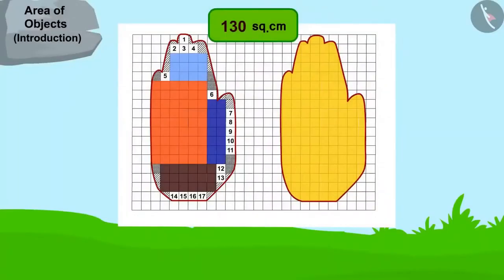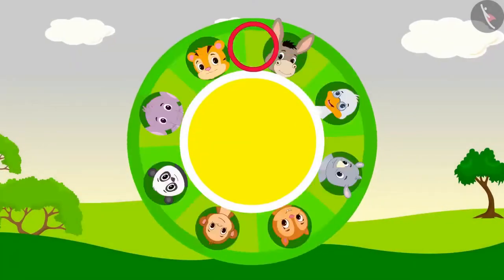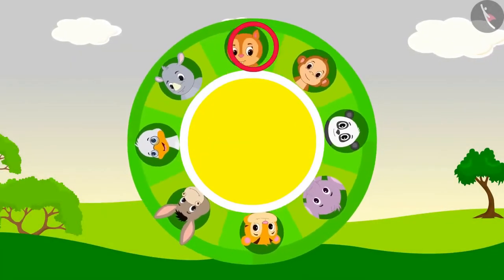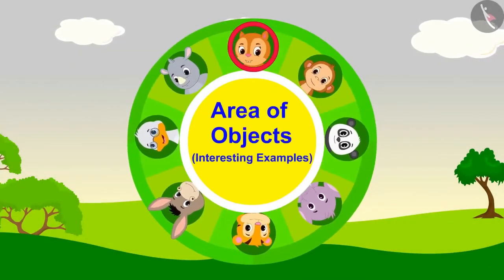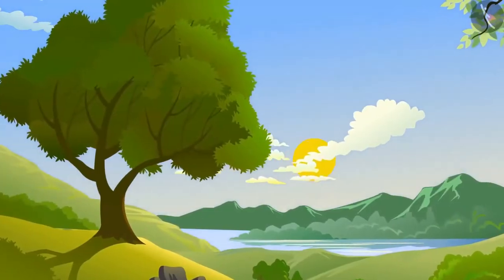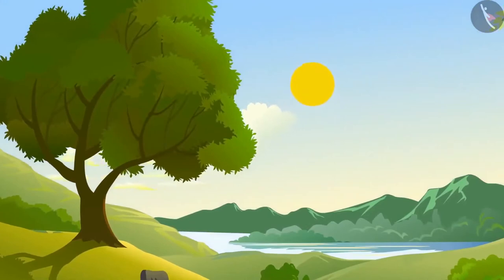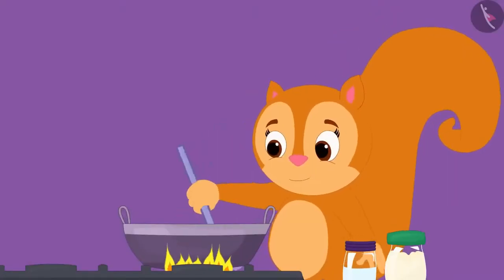Hello children. In the previous video, we learned to estimate the area of objects. In this video, we will learn more about it through some interesting examples. Champapur has received bright sunlight after the rainy season. Let me make papars, thought Chanda. Thinking this, Chanda made various kinds of papars.